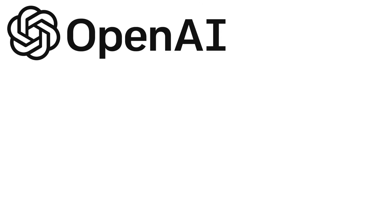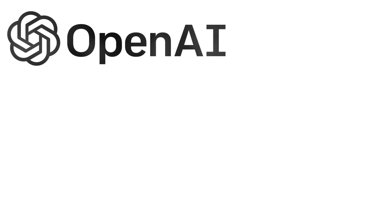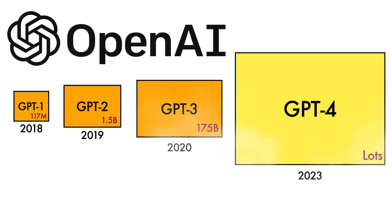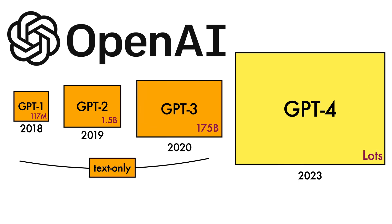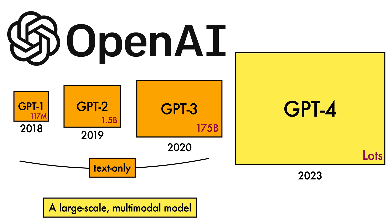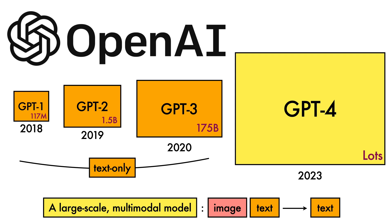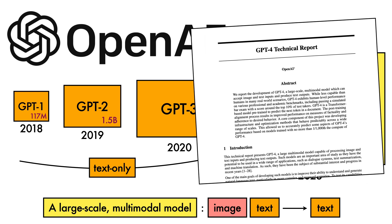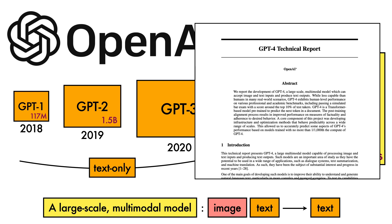In March 2023, OpenAI released their much anticipated fourth edition of the GPT family of language models. Differently to its text-only predecessors, GPT-4 is a large-scale multimodal model that maps images and text inputs to text outputs. This video will cover the GPT-4 technical report released by OpenAI, describing various aspects of the model.